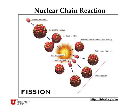Under controlled conditions where you allow most of the neutrons to escape so they can't stimulate other fission reactions, you can have a stable nuclear reactor for generating power. Under uncontrolled conditions where this geometric progression occurs, you have an atom bomb—the type of bomb that was dropped on Hiroshima and Nagasaki to end World War II.